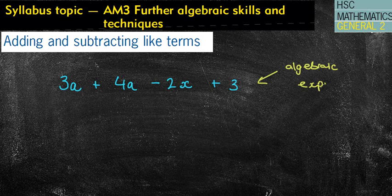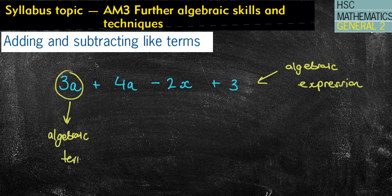An algebraic expression is what is made up of algebraic terms. For example, 3a is what we refer to as an algebraic term. Therefore, two or more terms makes up an algebraic expression.